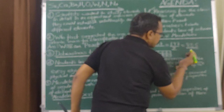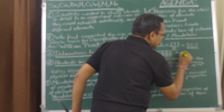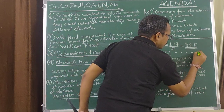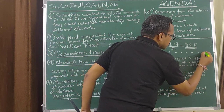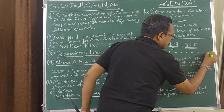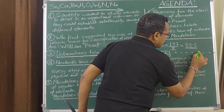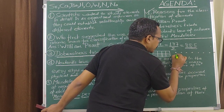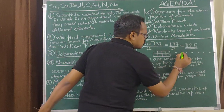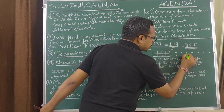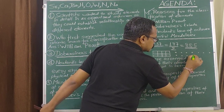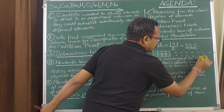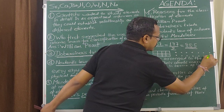If we arrange the elements in order — element number 1, 2, 3, 4, 5, 6, 7 — the eighth one lies just below the first one. He was pretty close to the modern periodic table. However, at the time of Mendeleev, scientists were not aware of the inert gases, also known as noble gases, which were not known at that time.